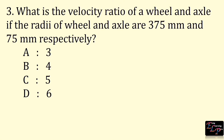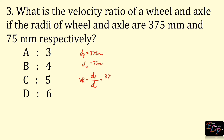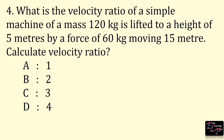What is the velocity ratio of a wheel and axle if the radii of the wheel and axle are 375 mm and 75 mm respectively? Given: distance moved by effort = 375 mm, distance moved by load = 75 mm. Velocity ratio equals 375 divided by 75, which is equal to 5.